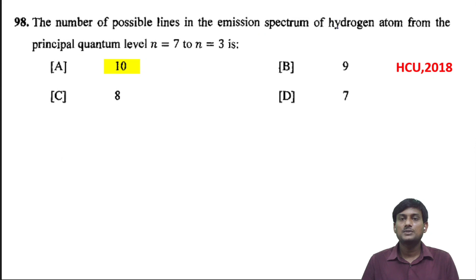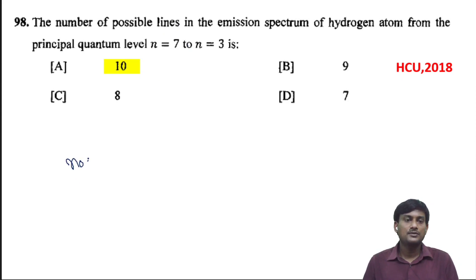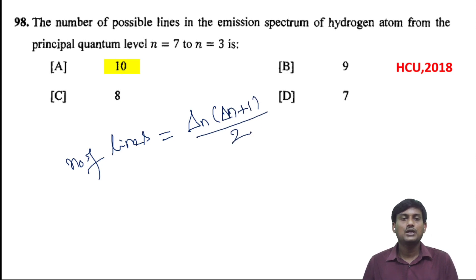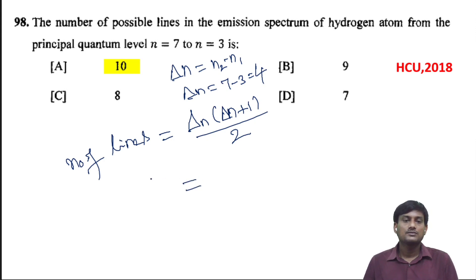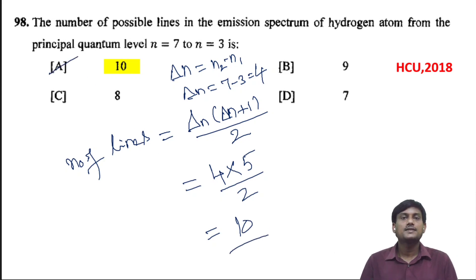The number of possible lines in the emission spectrum of hydrogen atom from the principal quantum level N=7 to N=3. For the calculation of number of possible lines, the number of lines in hydrogen spectrum is equal to ΔN(ΔN+1)/2. Here, ΔN is the difference in levels, N2 minus N1. So ΔN = 7 - 3 = 4. The number of lines will be 4×5/2 = 10. This is the correct option.